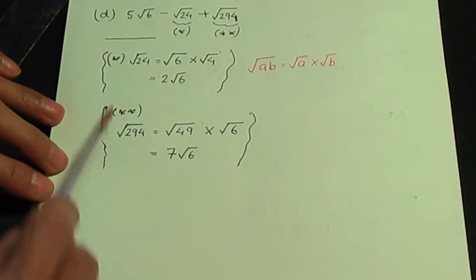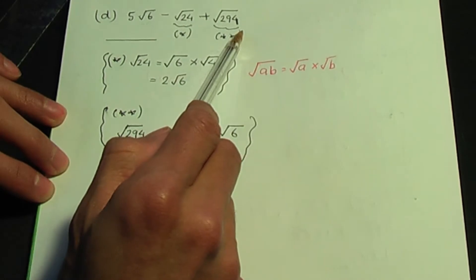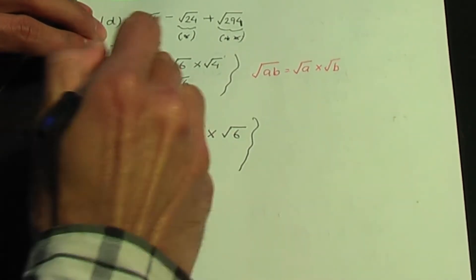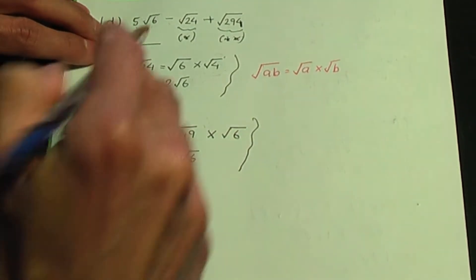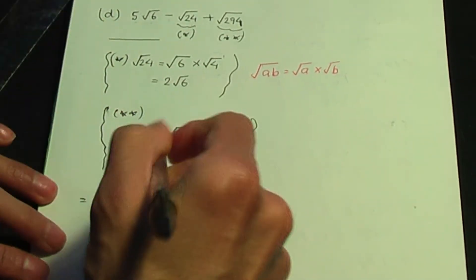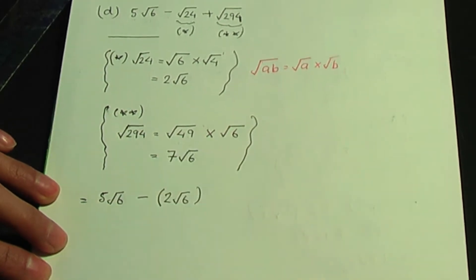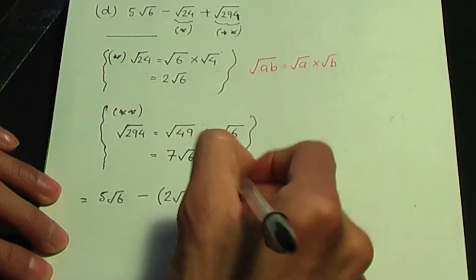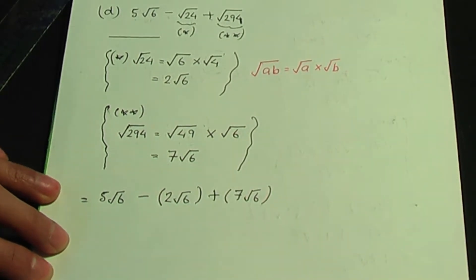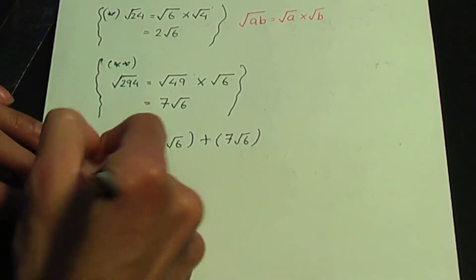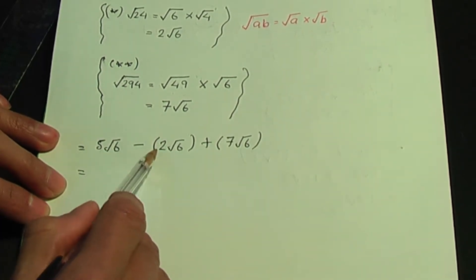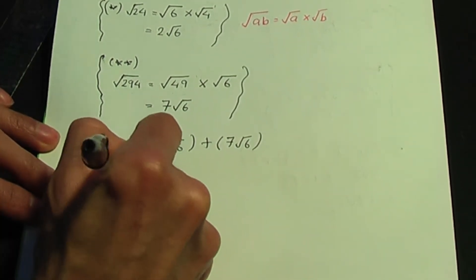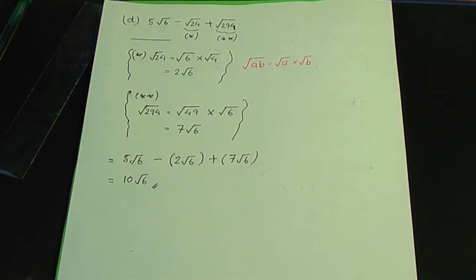Using these side calculations in the main expression: 5 root 6 minus (2 root 6) plus 7 root 6. Simplifying: 5 root 6 minus 2 root 6 is 3 root 6, and 3 root 6 plus 7 root 6 is 10 root 6. So that is the solution.